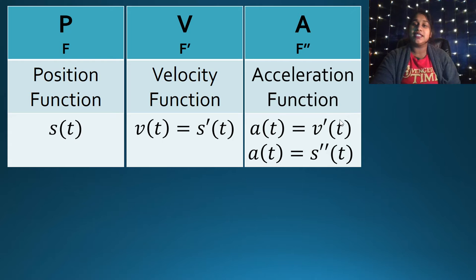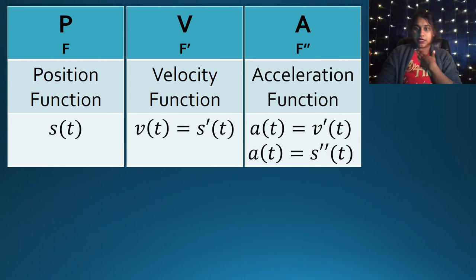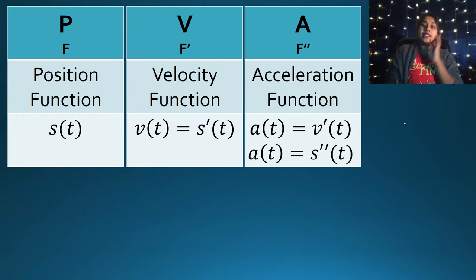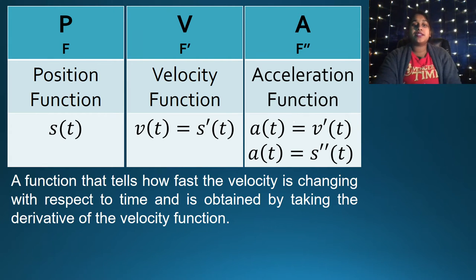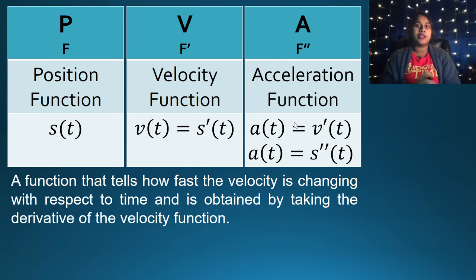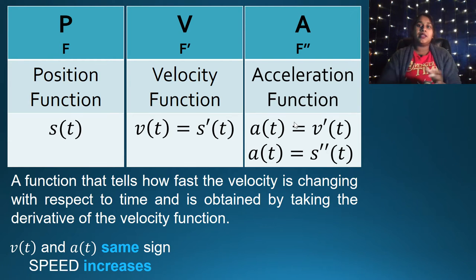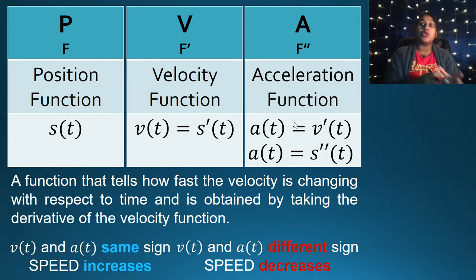Acceleration is our second derivative. The notation is A of T, which is the same as V prime, which is also the same as S double prime. This tells us how fast velocity is changing — that's what acceleration is, the change in velocity.